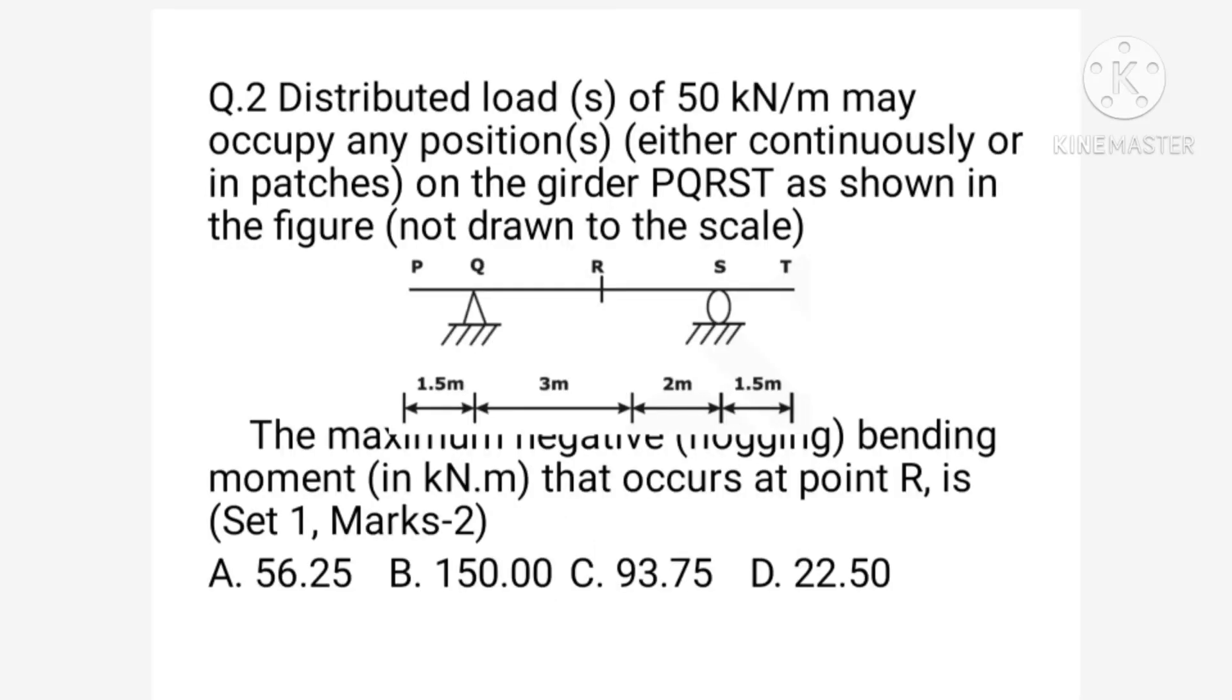Next question is for two marks. Distributed load of 50 kN/m may occupy any position either continuously or in patches on the girder PQRST as shown in the figure. This figure is not to the scale. The maximum negative bending moment that occurs at the point R is - there are four values given. This also we will have to solve.